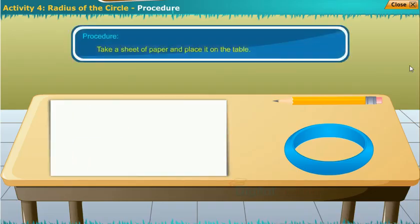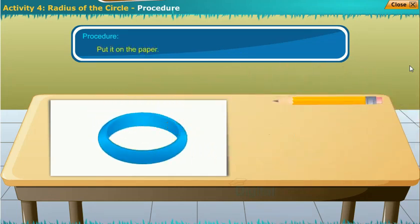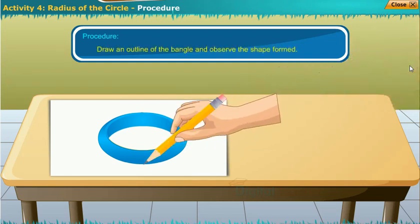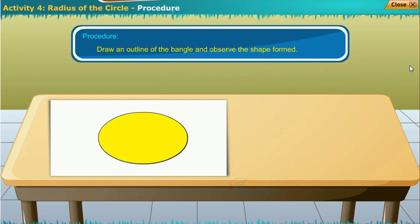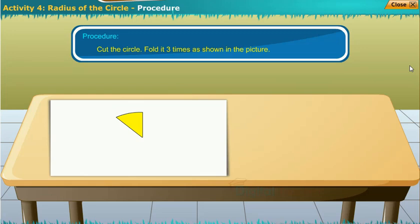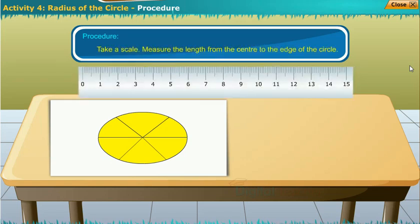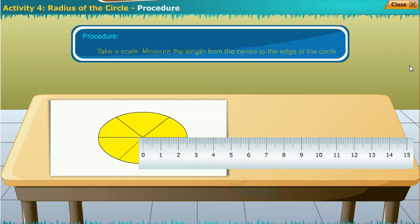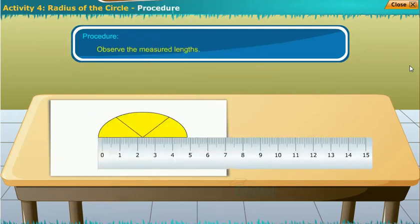Procedure: Take a sheet of paper and place it on the table. Now take a bangle, put it on the paper. Now take a pencil or marker, draw an outline of the bangle and observe the shape formed. Cut the circle, fold it three times as shown in the picture. Open it, they are all meeting at one point - this is the center of the circle. Take a scale, measure the length from the center to the edge of the circle. Take as many different points on the edge as you want. Observe the measured length.